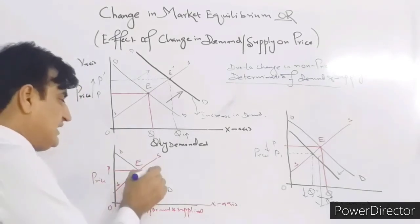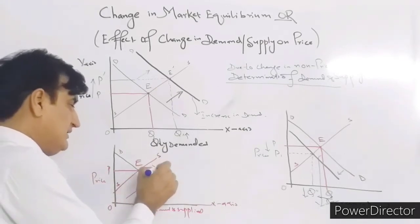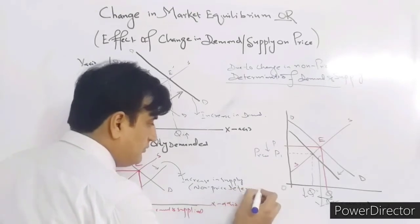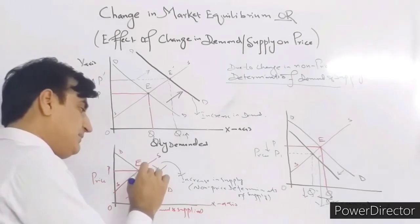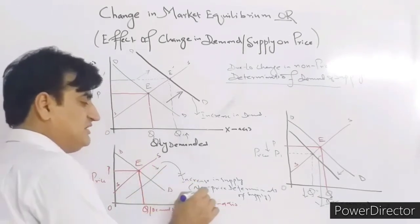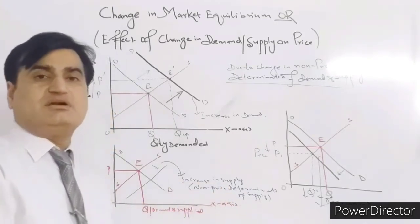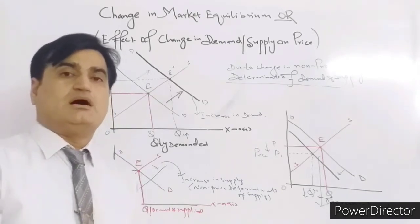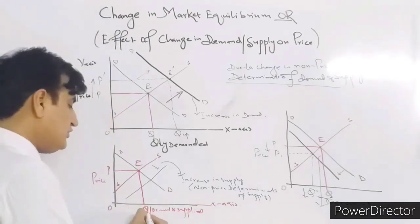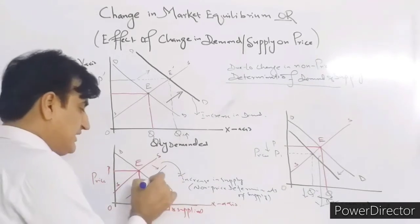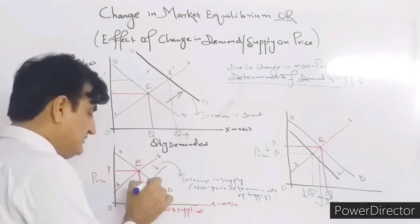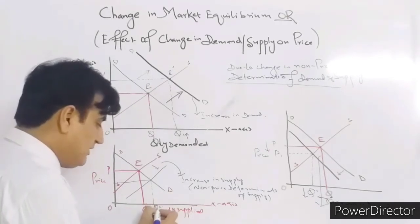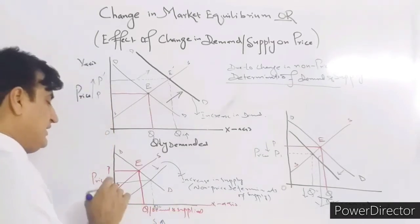Now we will see what happens when the supply curve shifts rightward, meaning supply increases. An increase or decrease in supply is due to a change in non-price determinants of supply — such as the number of suppliers increasing, price of substitute goods, government policy, or advertisements. When supply shifts rightward, quantity supplied increases from OQ to OQ double dash, and as a result the price goes down.